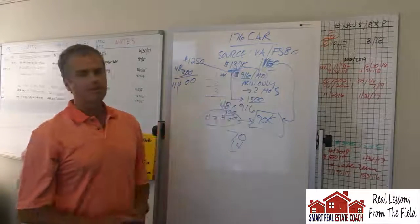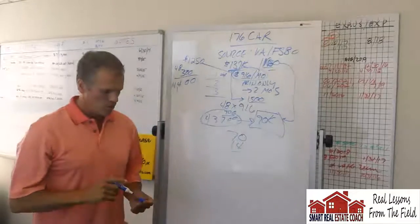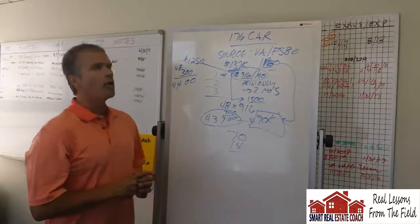So 70 and 14 is 84 grand on a house. It's worth $150, $160. So, I hope that helps you understand the power of the debt paydown.